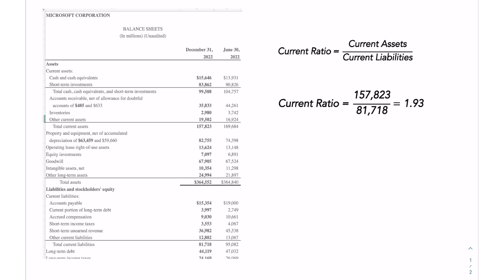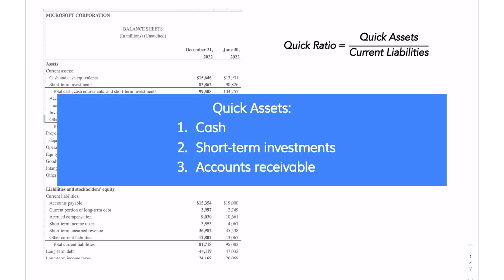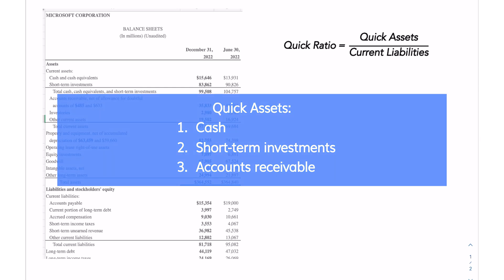Now, if we want to be a little bit more strict, there's something called the quick ratio. The quick ratio is similar to the current ratio, but it only includes what we consider to be quick assets — assets that can be quickly liquidated. There are three: cash, short-term investments that are very near maturity, and accounts receivable.